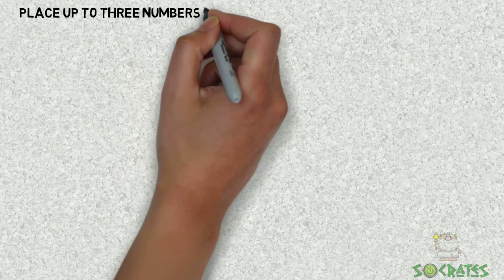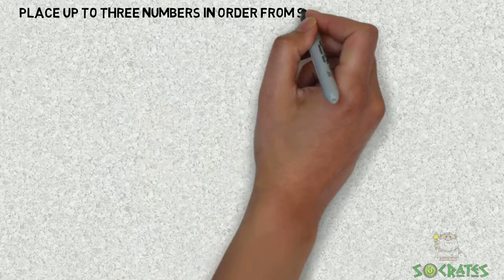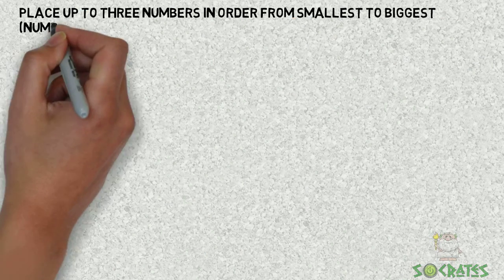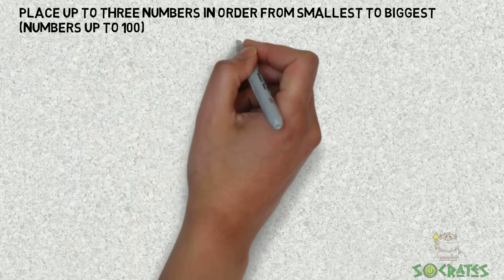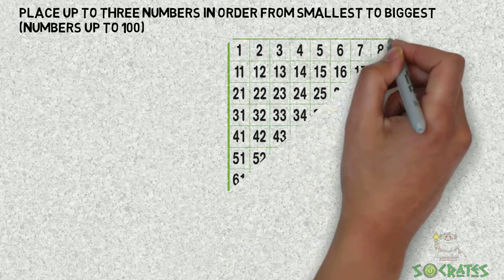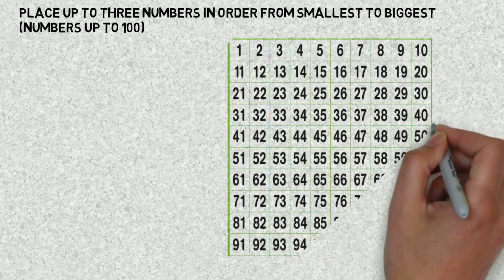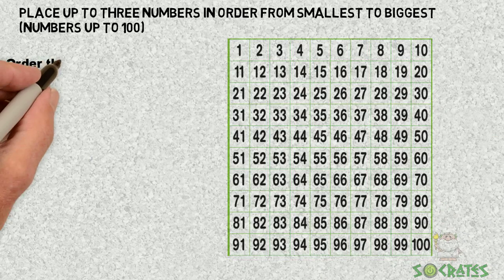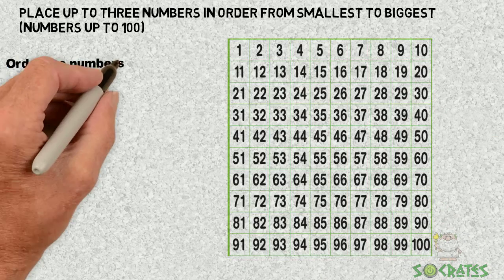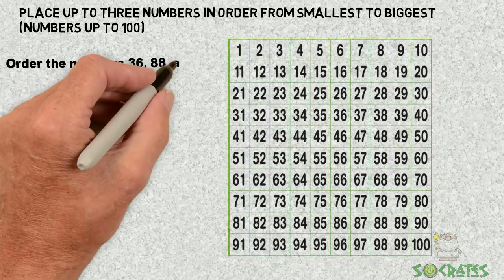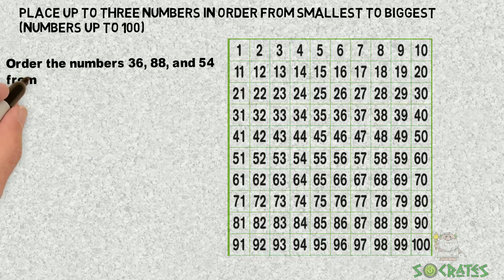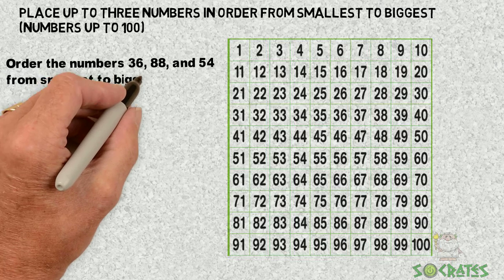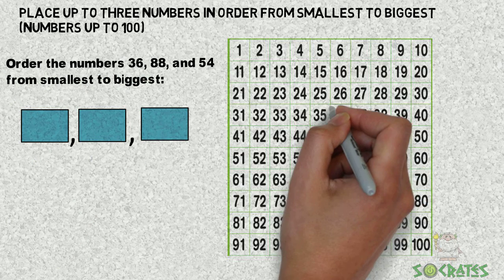Place up to three numbers in order from smallest to biggest, numbers up to 100. Let's use our hundreds chart. Order the numbers 36, 88, and 54 from smallest to biggest.